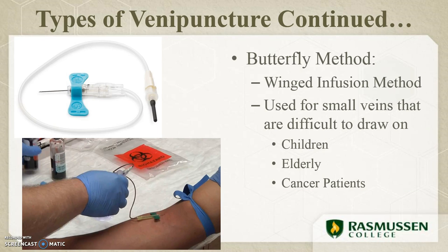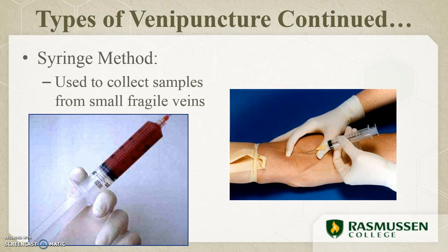Next we have the butterfly method, also called the winged infusion method. It is a needle that attaches to tubing, and at the end of the tubing a syringe or tube holder can be attached with evacuated tubes. This is what we use for smaller veins that are harder to draw on — for example, with children, on the hands, elderly patients, and cancer patients. The last type is the syringe method, which is used to collect samples from small, fragile veins that cannot stand the pressure of the evacuated tube method. If you need more than about five milliliters of blood, you can use a larger syringe size to get the appropriate amount.